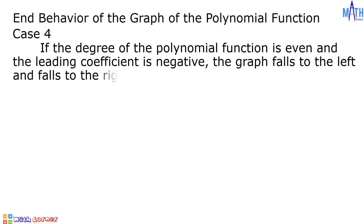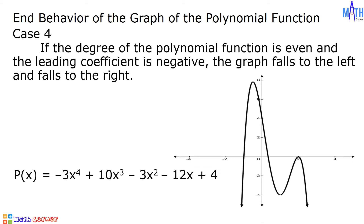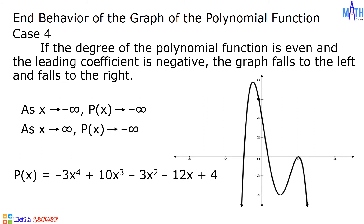Case number four: if the degree of the polynomial function is even and the leading coefficient is negative, the graph falls to the left and falls to the right. Consider p of x equals negative 3x raised to 4 plus 10x cubed minus 3x squared minus 12x plus 4. The graph falls to the left and falls to the right. As x approaches negative infinity, p of x approaches negative infinity. As x approaches positive infinity, p of x approaches negative infinity.